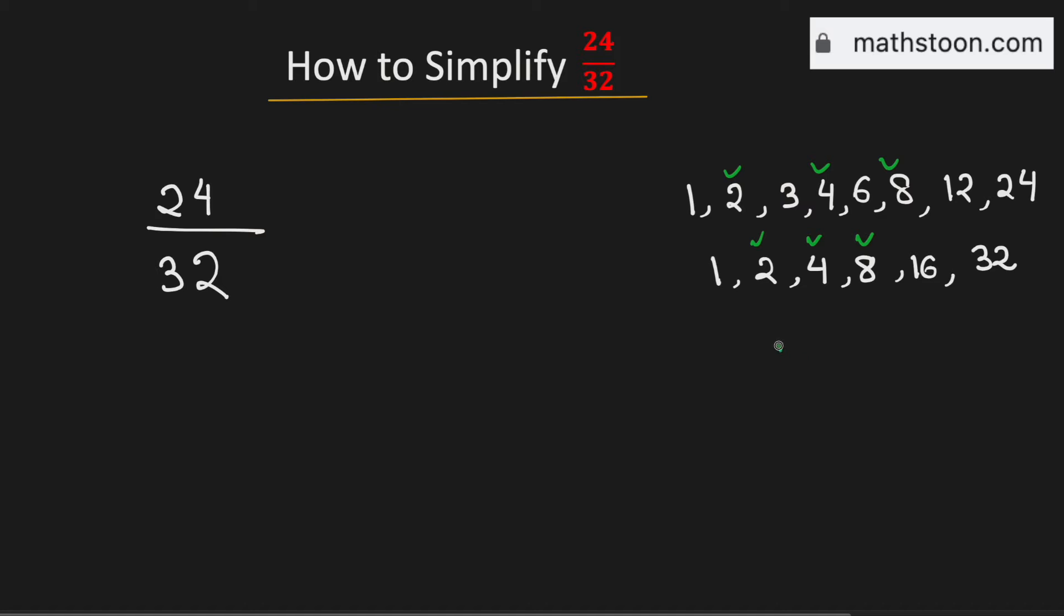Therefore the greatest common factor of 24 and 32 is 8.